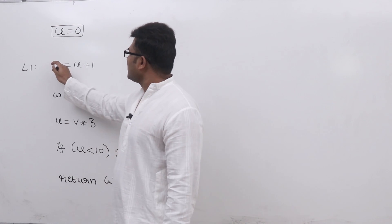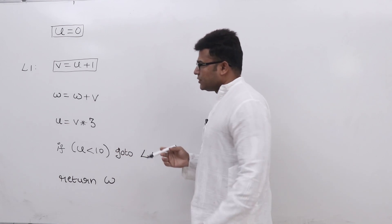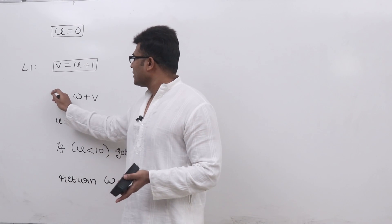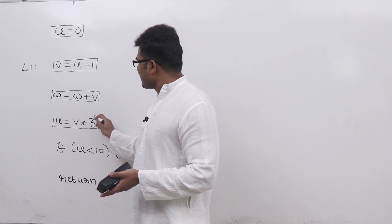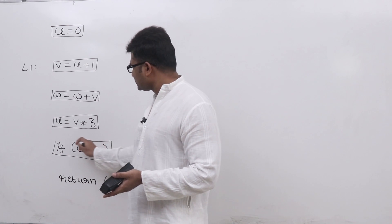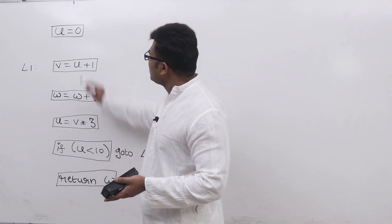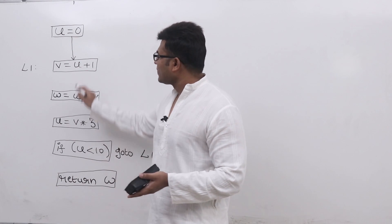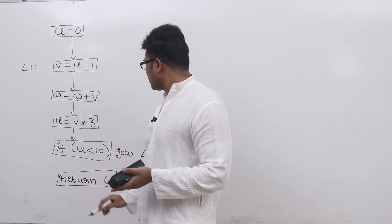In all these analyses that we are doing, I'm just assuming that every line is a basic block. So if you see the control flow, from this statement control is flowing to the next statement. This is the control flow graph.